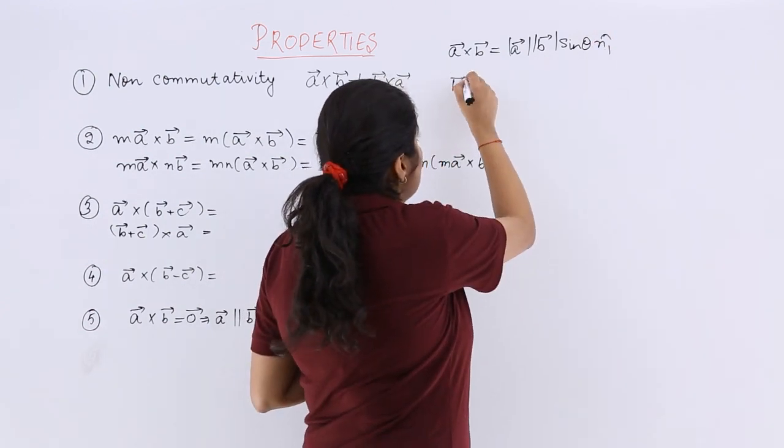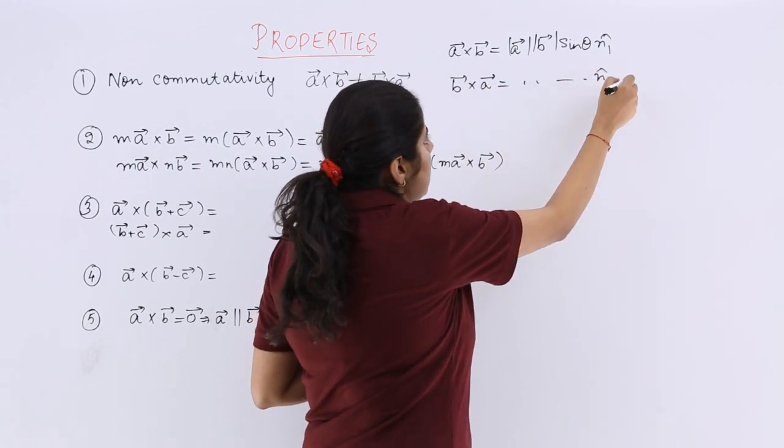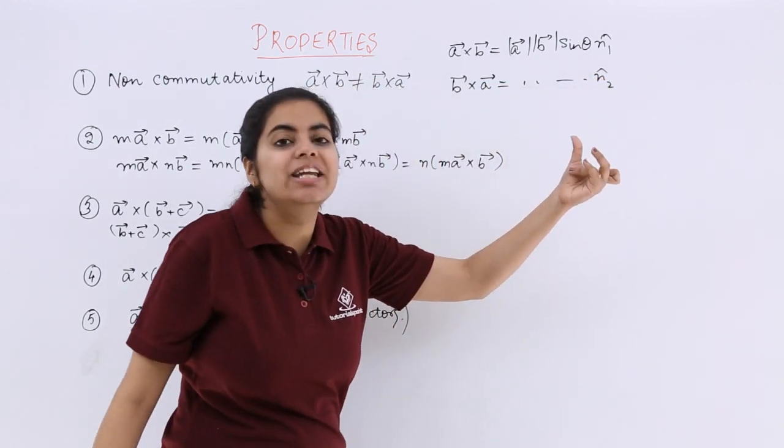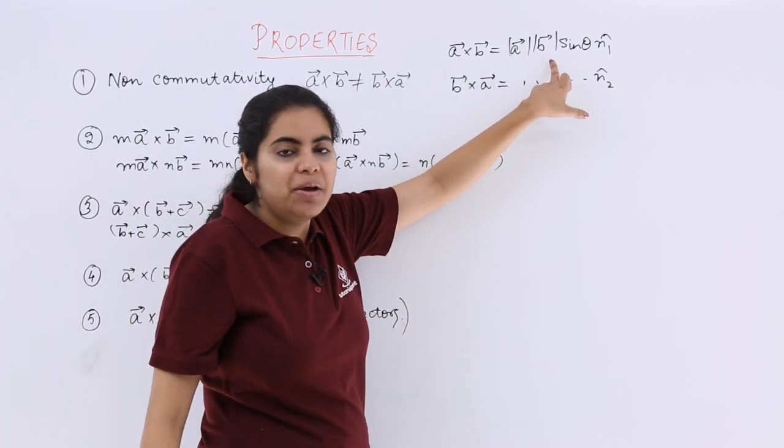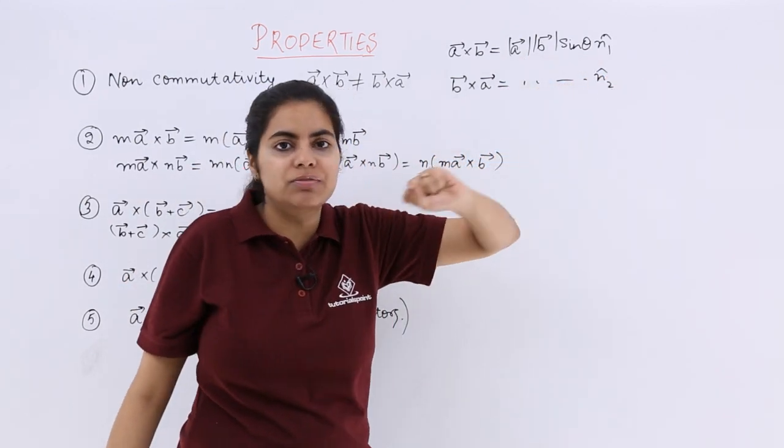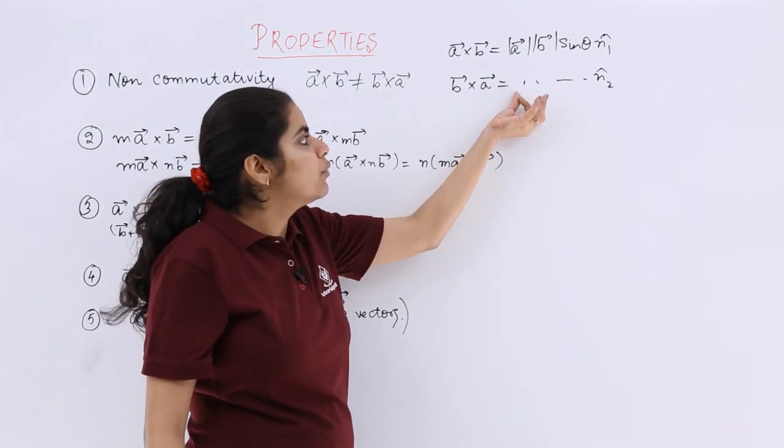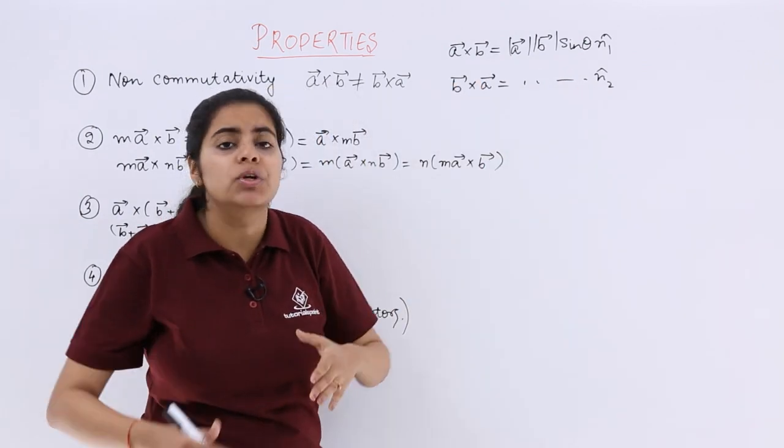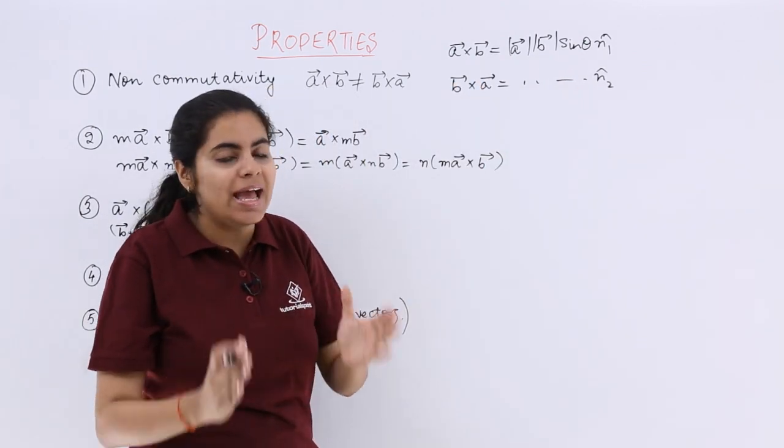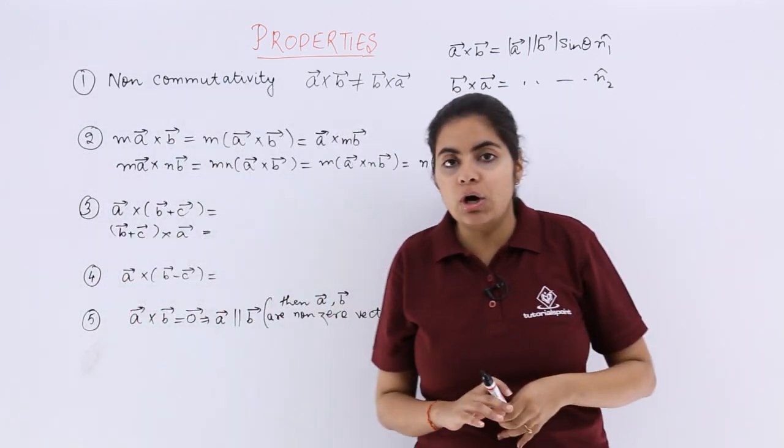And in the second case of b × a, things will change to another unit vector n₂ cap. So in the first case your vector a, b, and n₁ unit vector will form a right handed system, but here b, a, and n₂ will form a right handed system. So the order changes and hence commutativity is not followed. So it is non-commutative.